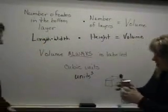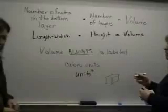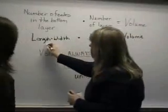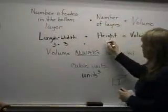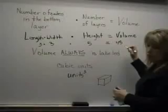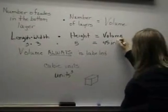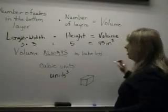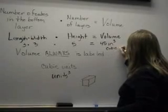So, our box, the volume was... What was the bottom layer again? Three by three. The length of three. Three times three times five. Five. Gave us forty-five. And if those are inch unit cubes, then it would be inches cubed or cubic inches. Okay. Forty-five cubic inches.